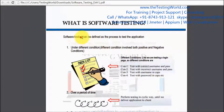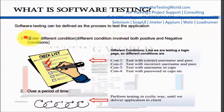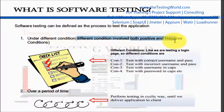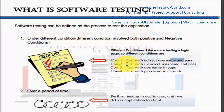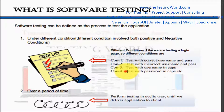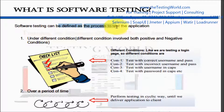Different conditions involve both positive and negative conditions. Taking the example of a login page: condition one — testing with correct username and password; condition two — incorrect username and correct password; condition three — username in caps; condition four — password in capital letters. We can have many more conditions in software testing.